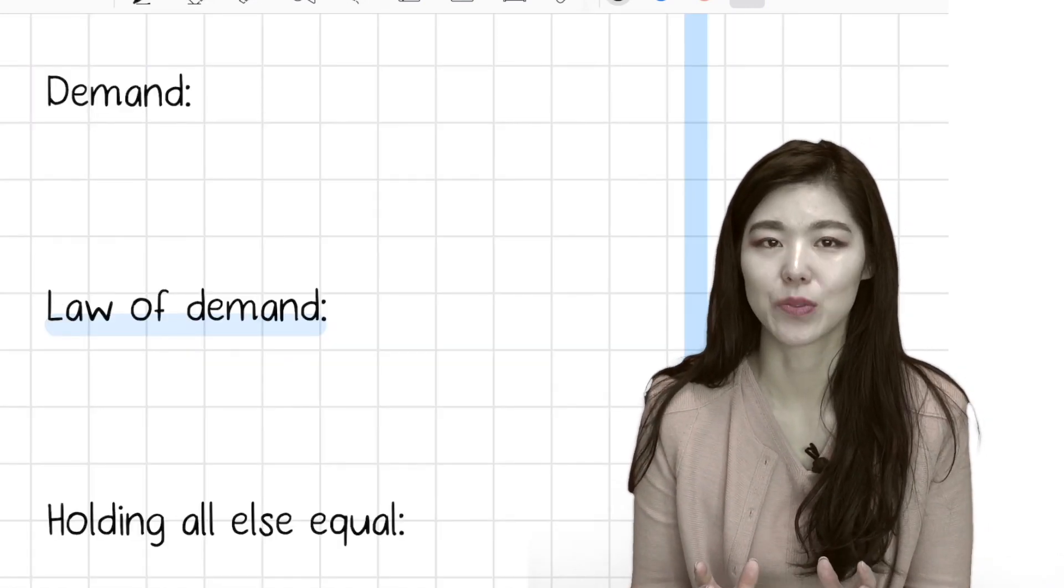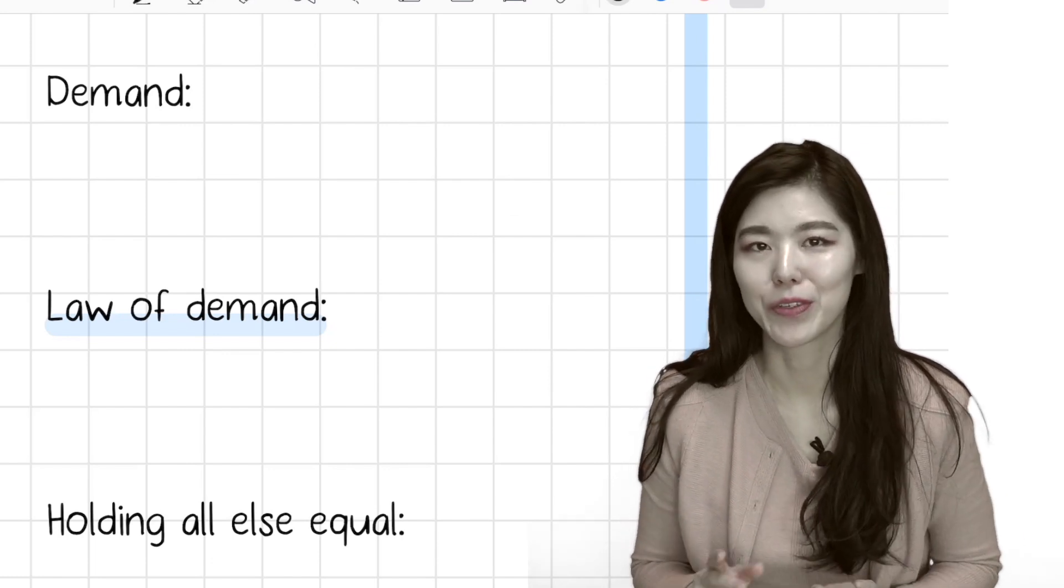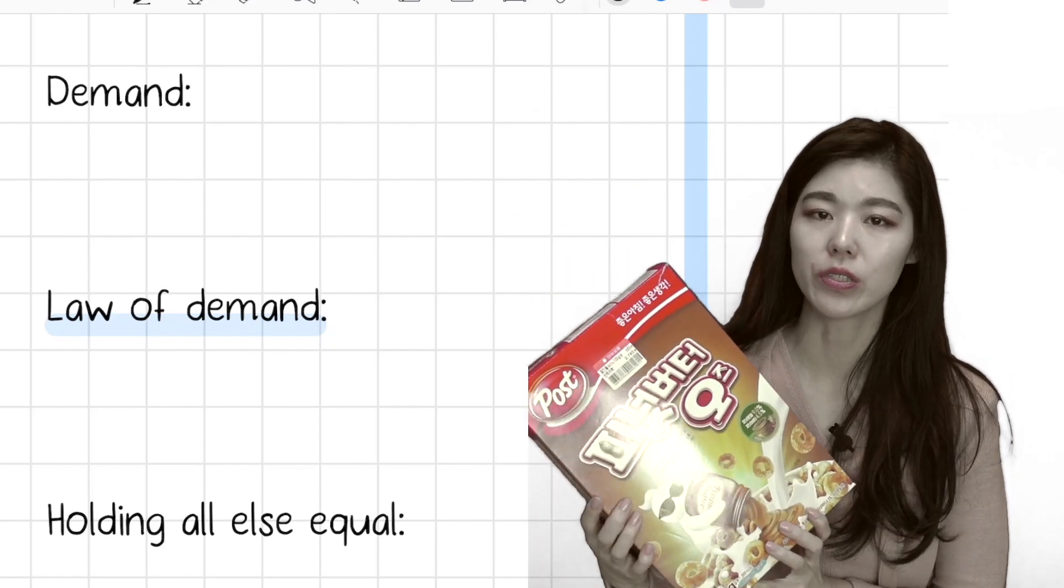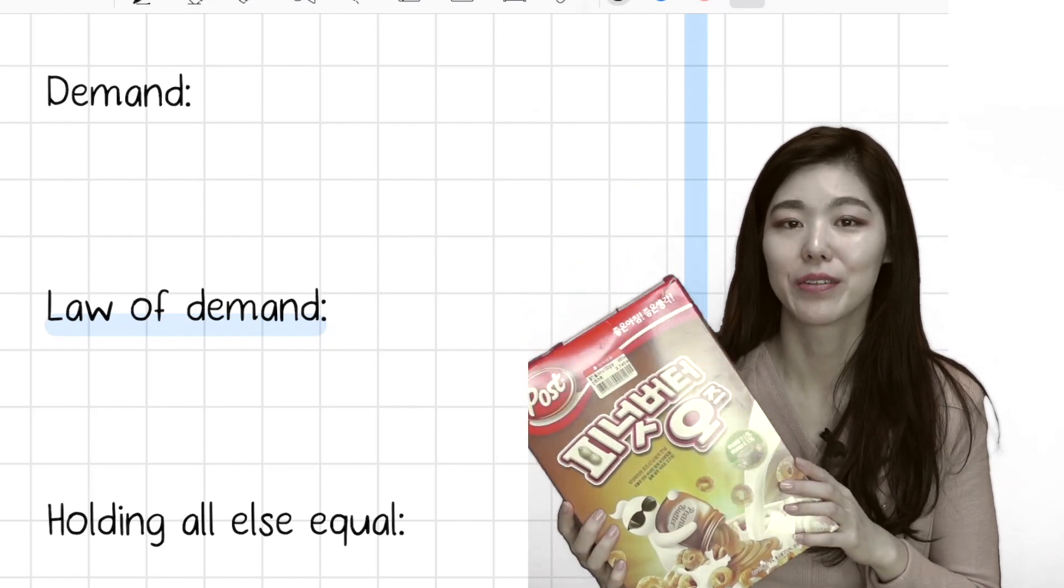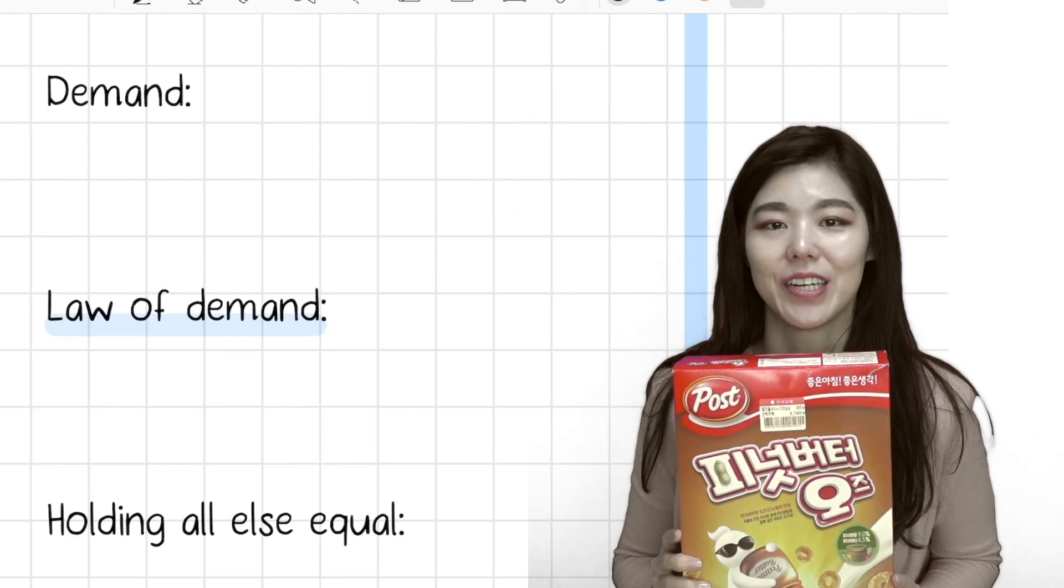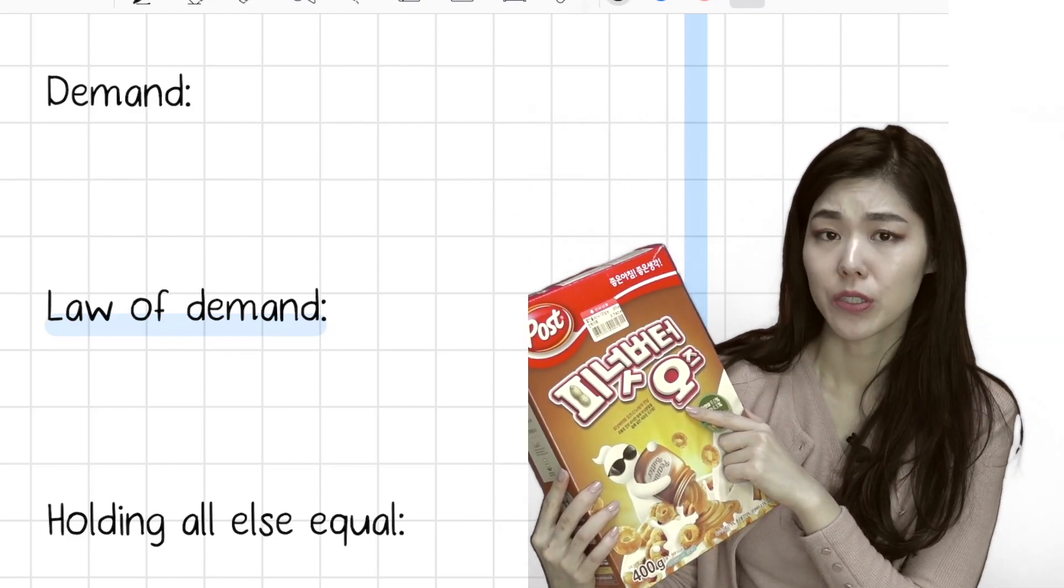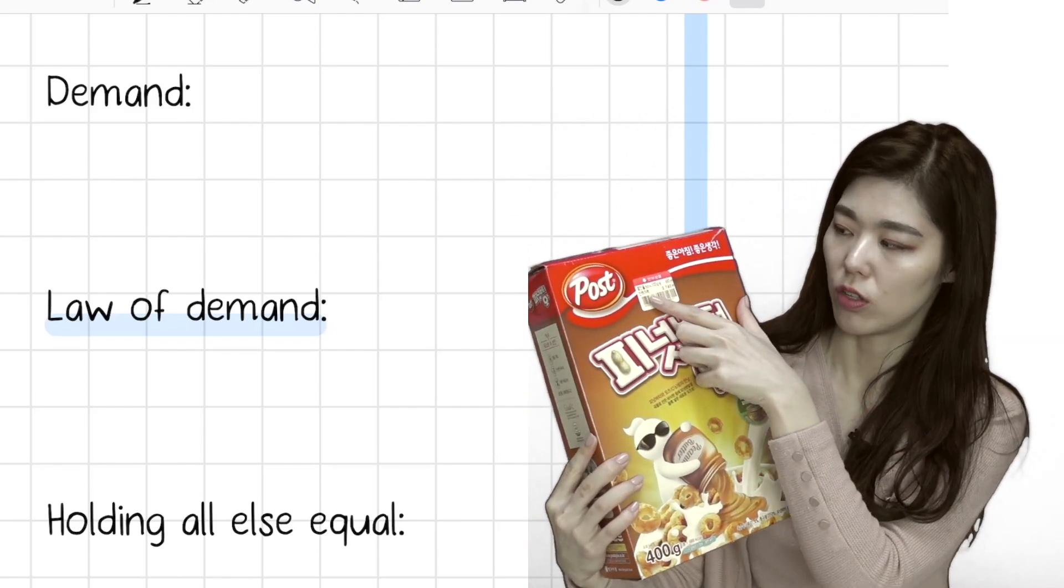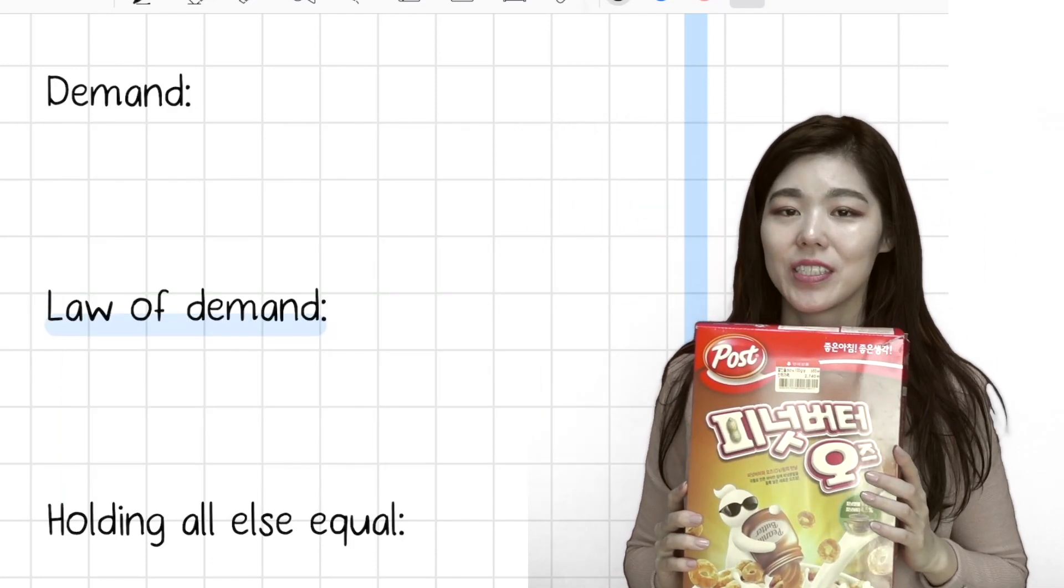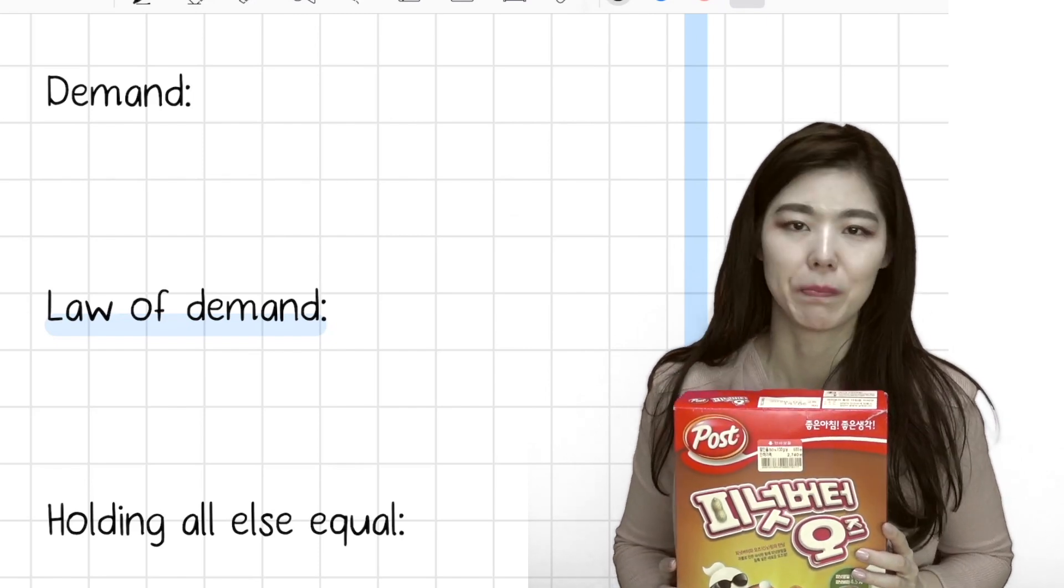The law of demand is when the price is cheaper, people buy more of it. So for example, you go shopping and find something on sale. I bought this peanut butter Oreos. In Korea, we have Oreo cereals. You should always buy Oreo cereals when you come visit Korea. But this is actually a peanut butter Oreo cereal. I like the original ones, but they were on sale. Look, they were like 50% on sale. So I had to buy this. So the cheaper it is, the more likely that you as a consumer will buy stuff.